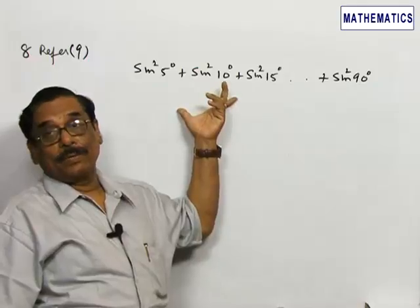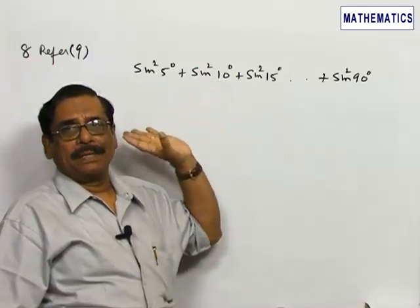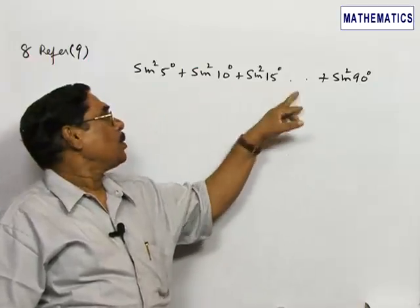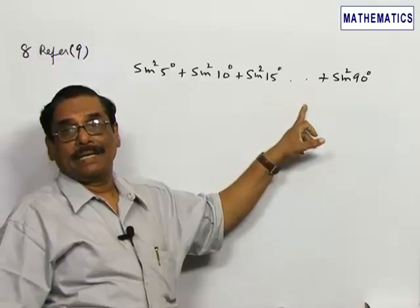This problem is ridiculously simple if you remember cos squared theta plus sine squared theta is equal to 1, and how you are going to combine it is very easy.